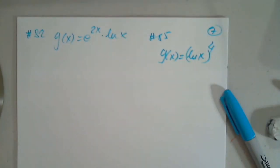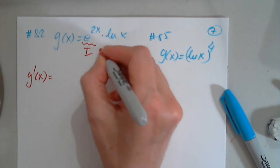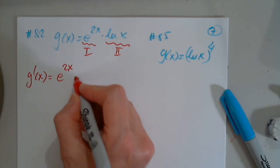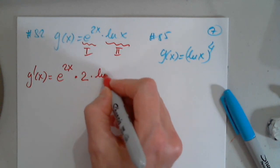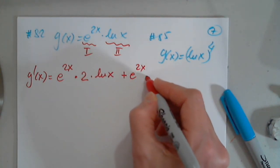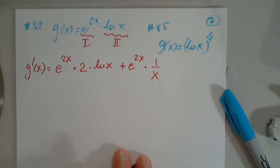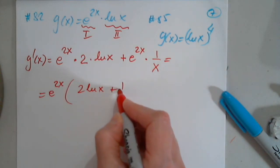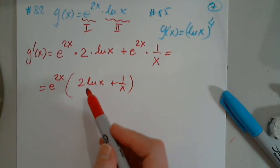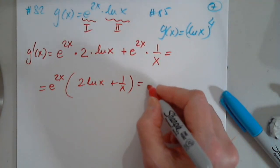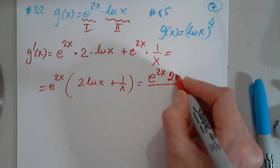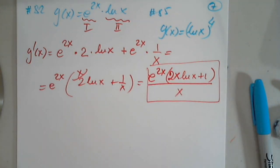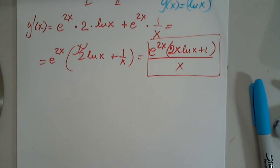So g prime. Product. First function prime. e to 2x times the inner function prime times the second plus the first times the second prime. There's nothing I can do here other than just factor out e to 2x. So then I have 2 natural log x plus 1 over x. I can just leave it alone or you can write 2x natural log plus 1 over x. As finding the least common denominator. Same thing. e to 2x. 2x. I have to multiply this by x. Natural log x plus 1. Don't forget parentheses.